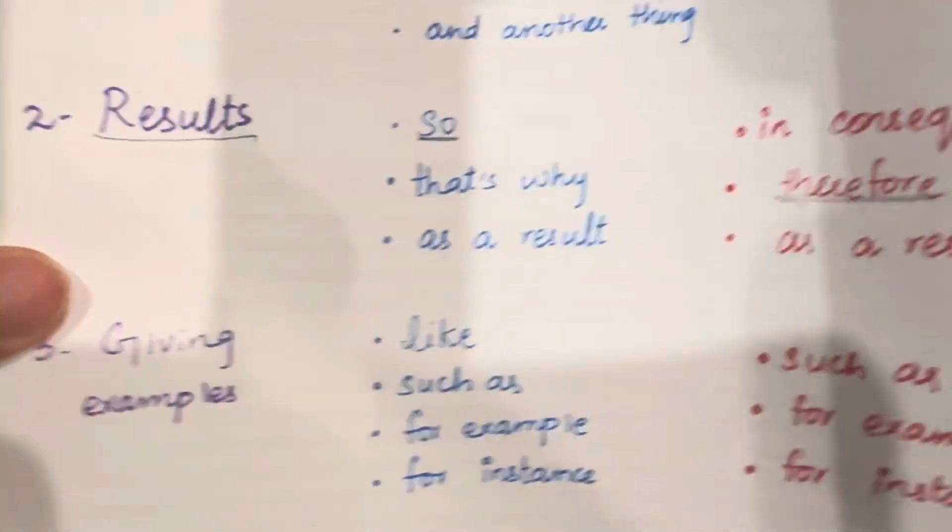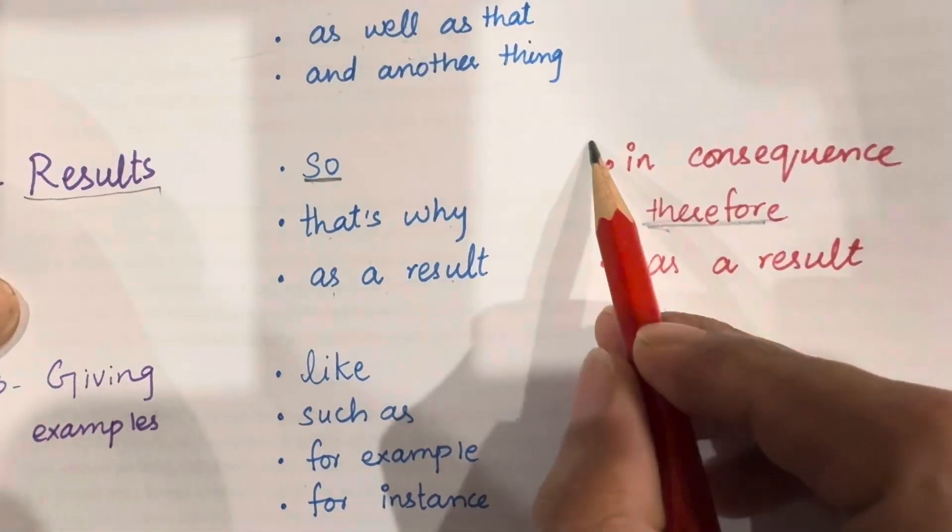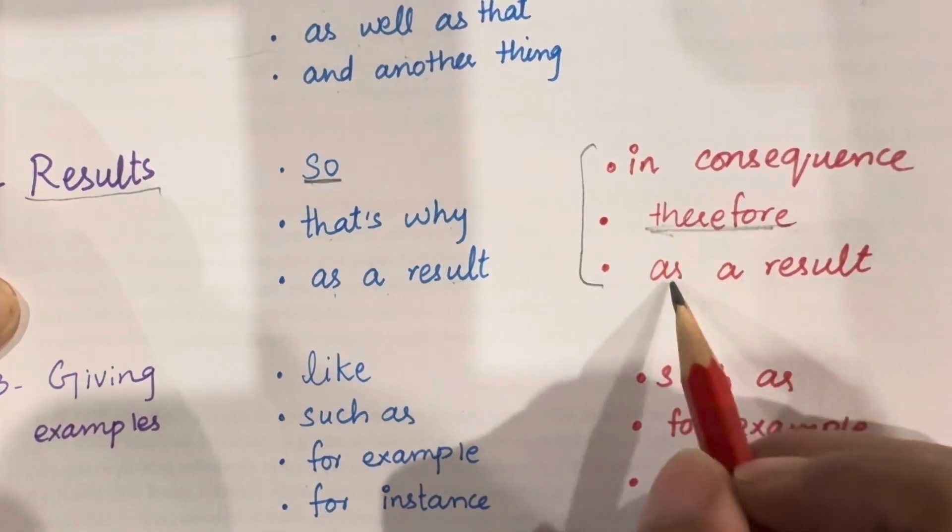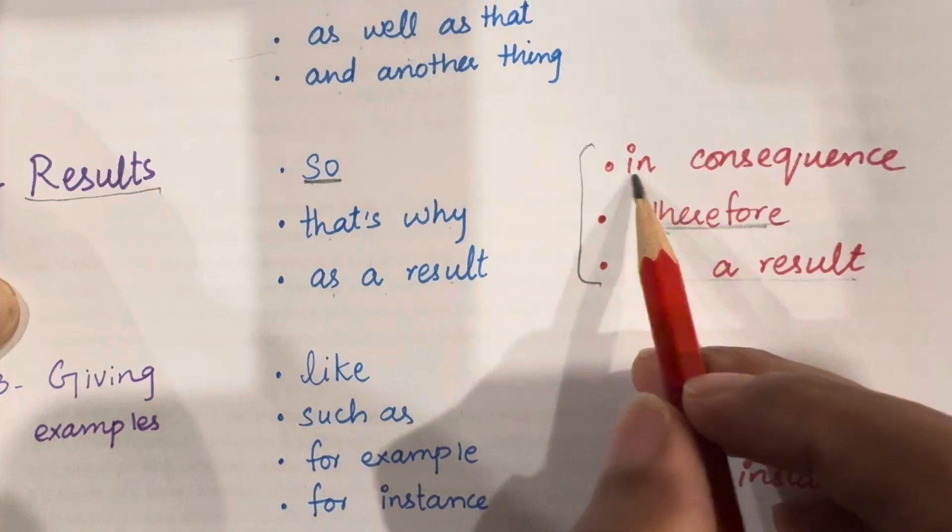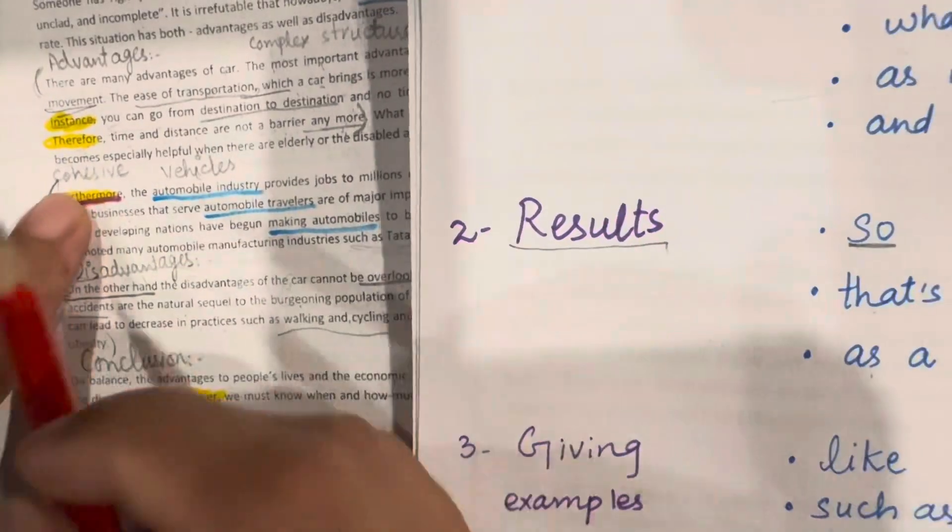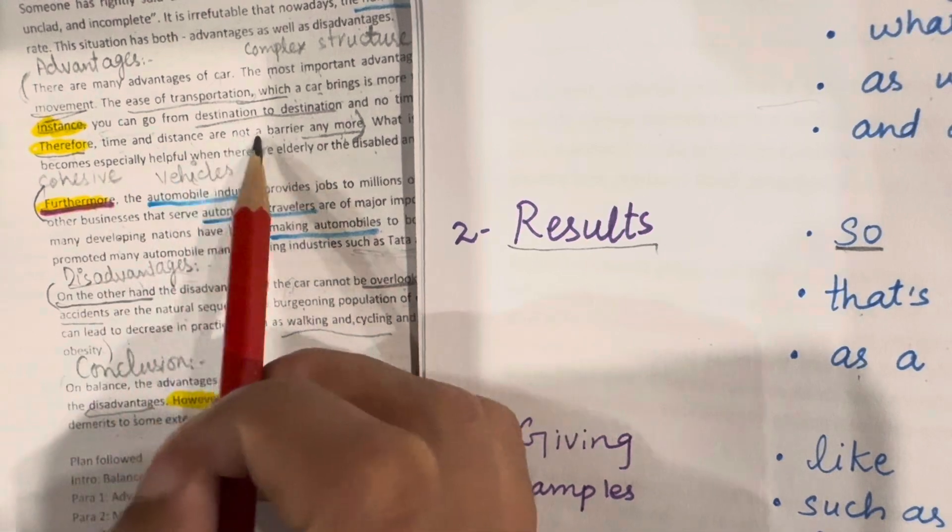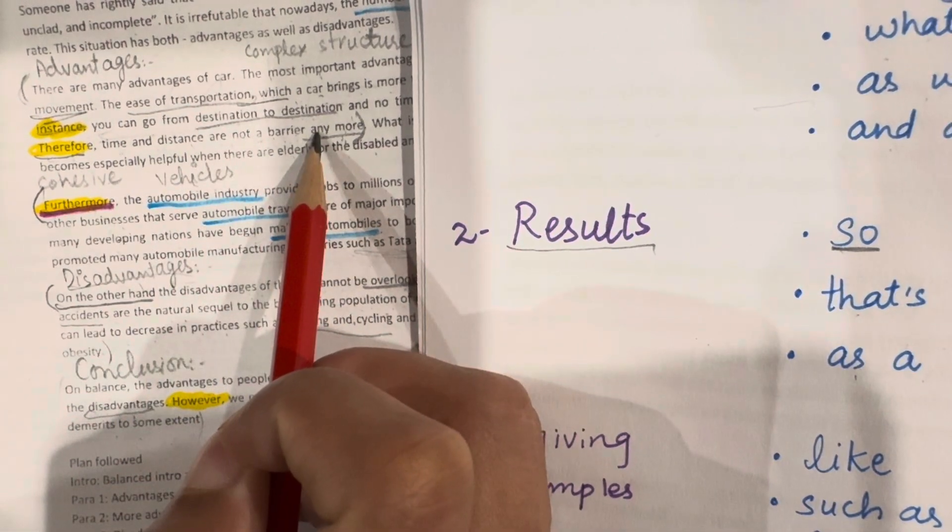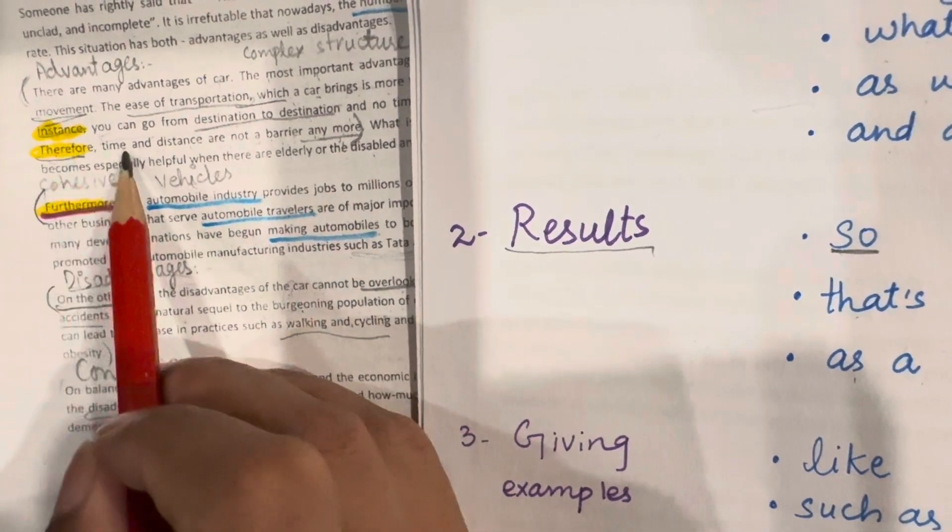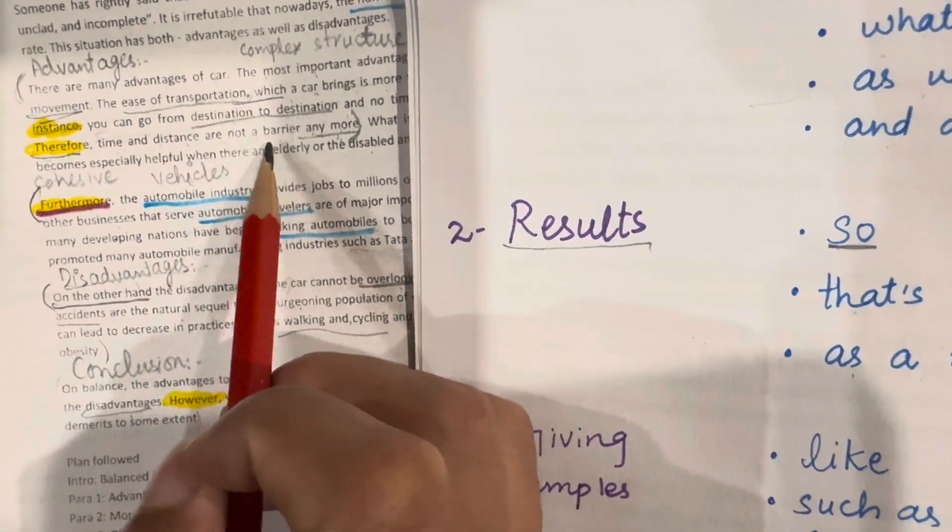So, this is how we can use these words in our writing. We can use as a result, and in consequence. In consequence, time and distance are not a barrier anymore. And we can also write as a result, time and distance are not a barrier anymore.